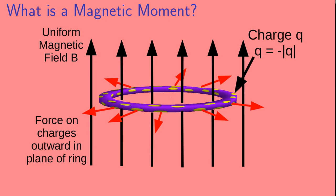A charge moving in a magnetic field will experience a force. That force will be perpendicular to the velocity of the charge and perpendicular to the applied magnetic field. In the case of these charges that we've glued to the ring, they will experience a force in the horizontal plane outward from the ring. The force experienced by the charges glued to the ring is represented by the red arrows.